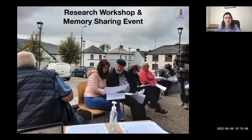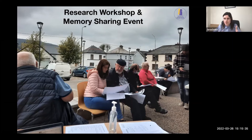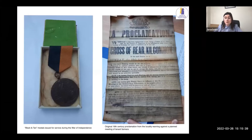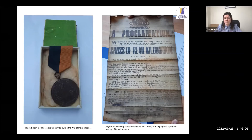We held a research workshop where we showed the community how to research events in their area themselves if they want to do more in the future. We showed them how to use the military archives and the maps that we did, and we shared the information we had gathered. They in turn shared their information with us — they were able to direct us to a couple of safe houses we weren't sure about. They also brought in some objects: someone brought in a Black and Tan medal issued to those who fought in the War of Independence, and someone else brought in a 19th-century proclamation warning local tenant farmers not to meet up. These were two fantastic artifacts we hadn't heard of before, a great example of how the community is preserving their history.